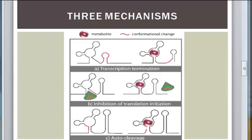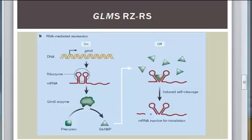Therefore no translation. The third mechanism is autocleavage, also known as splice processing. This is a special case of riboswitch that acts very similar to ribozymes. We will look at this in more detail in the next slide.